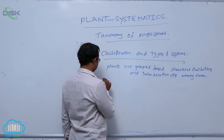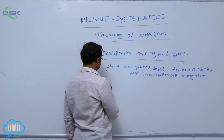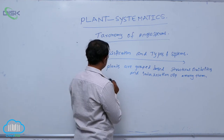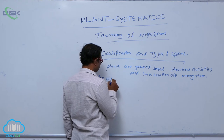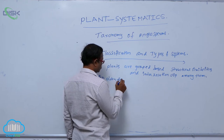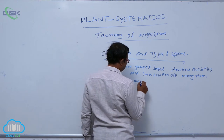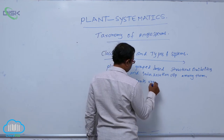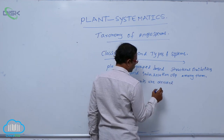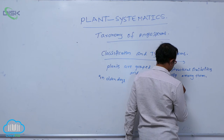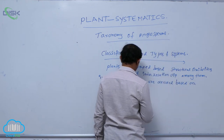The first classification system — in ancient times, in olden days, plants were divided based on their economic uses.